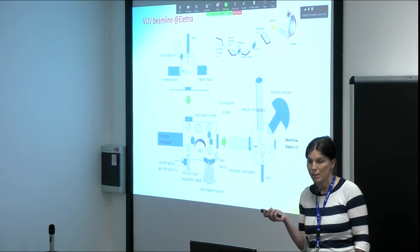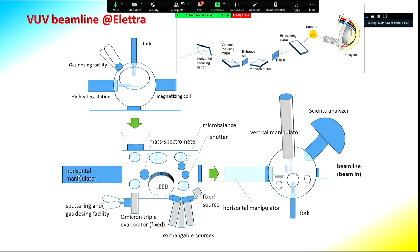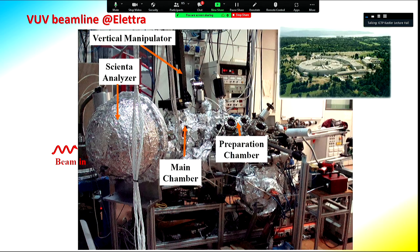This is the typical layout of an experimental setup for studying photoemission. You need a place to insert samples, all the experimental facilities to prepare samples — dosing gases, sputtering, annealing, cooling, heating — and also for making basic checks of the sample surface. Then, when the sample is ready, you can transfer it in front of the beam and take your photoemission with an analyzer. In reality, the big piece is the hemispherical analyzer, these are the experimental chambers, and these are all the facilities including gas bottles and manipulators to transfer samples.